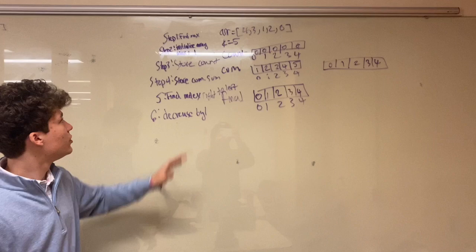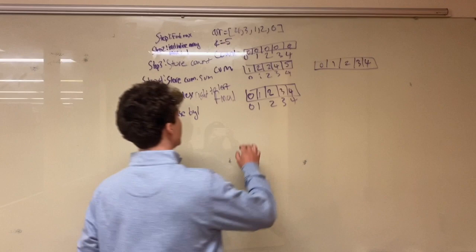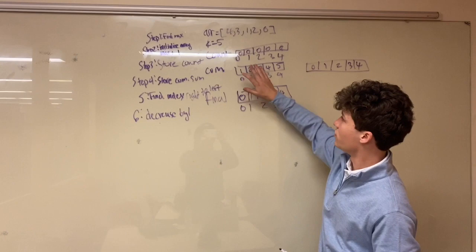After that, you go to step 2. Initialize array max plus 1. So we create a new array and initialize every value to 0 with size 5. So we have 0, 1, 2, 3, 4, each initialized to 0.